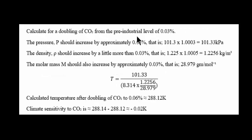We'll calculate for a doubling of CO2 from the pre-industrial level of 0.03%. The pressure P would increase by approximately 0.03%, which is 101.33 kPa. The density ρ should increase by a little more, about 0.05%, which is 1.2256 kg/m³. The molar mass M should also increase by approximately 0.03%, bringing it to 28.979 grams per mole. The calculated temperature after doubling CO2 from 0.03% to 0.06% will be 288.12 Kelvin.